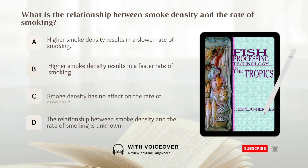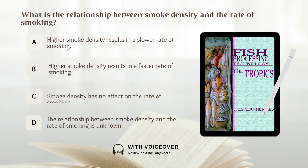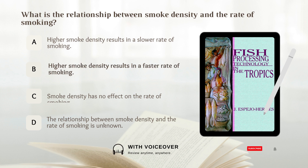What is the relationship between smoke density and the rate of smoking? A. Higher smoke density results in a slower rate of smoking. B. Higher smoke density results in a faster rate of smoking. Answer: B. Higher smoke density results in a faster rate of smoking.